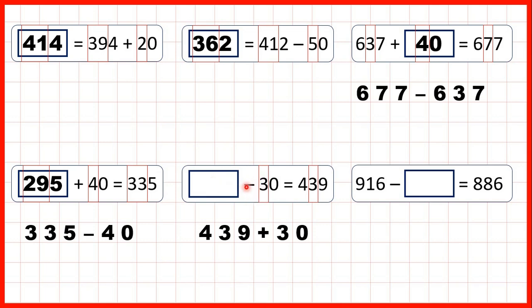So we can add 439 and 30. So that gives us 469. Because if we have six tens and take three away, we will have three tens. And then the four in our hundreds and nine in our ones stay the same.